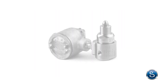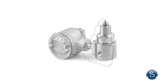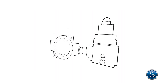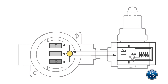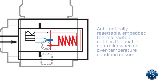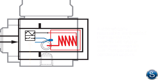The Swagelok heated KEV series regulator is designed to respond to changes in ambient temperature. An automatically resettable embedded thermal switch notifies the heater controller when an over-temperature condition occurs. The controller responds to this signal by interrupting power to the heater.